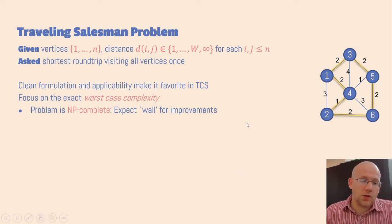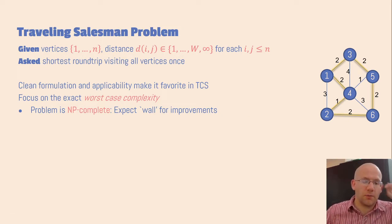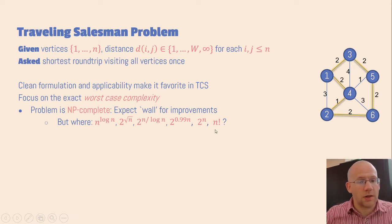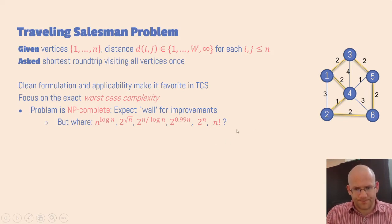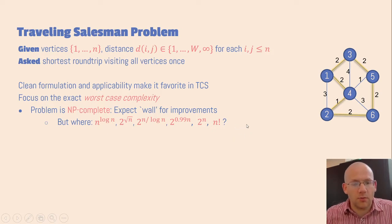If we assume that P is not equal to NP, then we know that TSP cannot be solved in polynomial time, but nevertheless it could still be solved in quasi-polynomial time, sub-exponential time, or even moderately exponential time. And when trying to get more and more improvements we expect to hit some wall, and maybe at that moment we get some more refined understanding of NP-completeness.